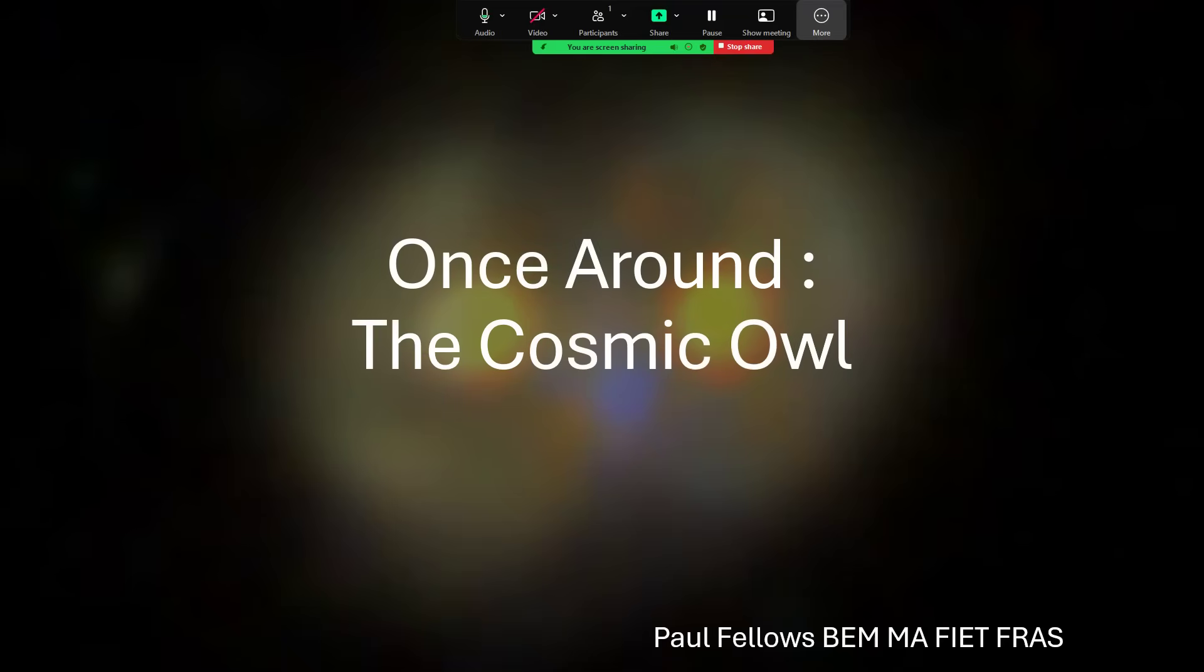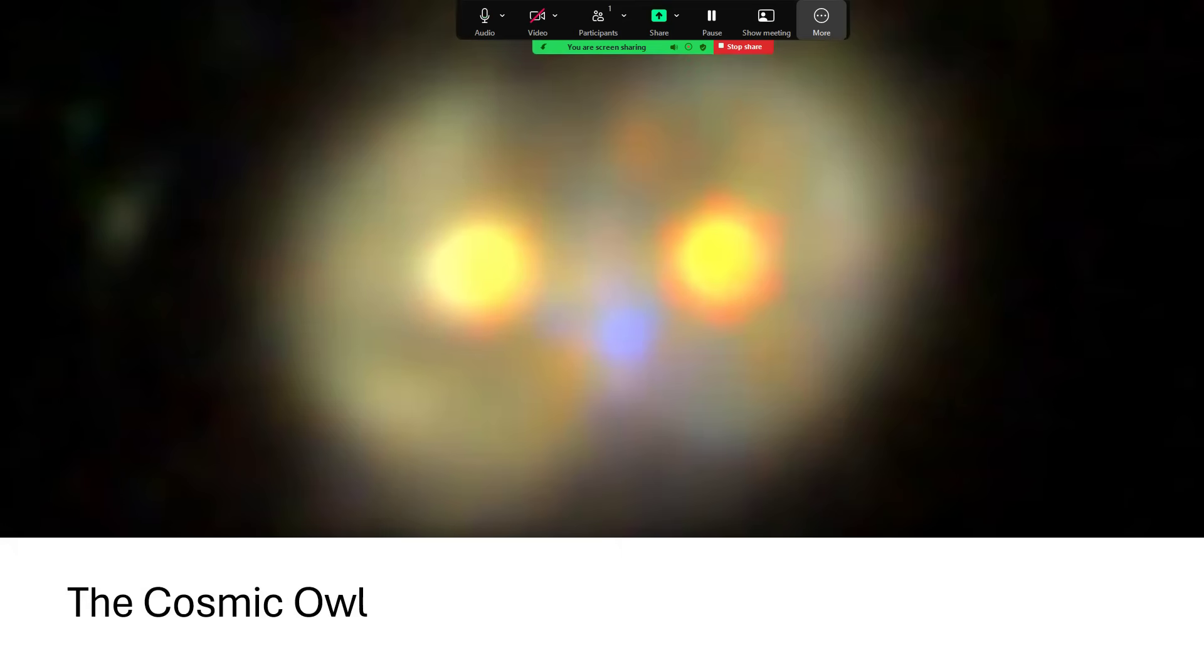The Cosmic Owl was the name given to this particular image with two bright eyes surrounded by a face and the blue central region being the beak. We now know what's going on here - the two sides making up the eyes and eye sockets are galaxies.